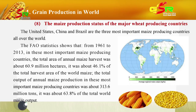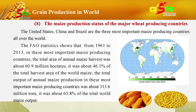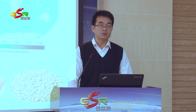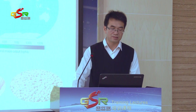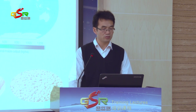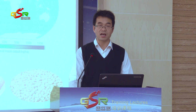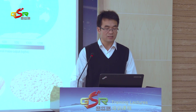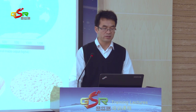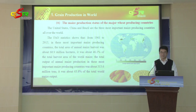The United States, China, and Brazil are the three most important maize-producing countries of the world. FAO statistics from 1961 to 2013 show that in these major maize-producing countries, the total area of annual maize harvest was about 61 million hectares, accounting for about 64% of the total world maize output.